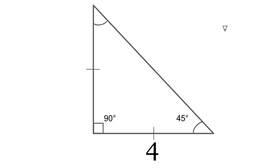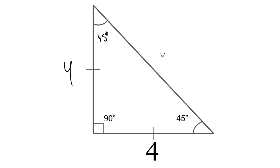Next, here we also have just one side of the right triangle. We know that this angle is also 45 degrees, this other side will also be 4, and the hypotenuse would be 4 multiplied by the square root of 2.